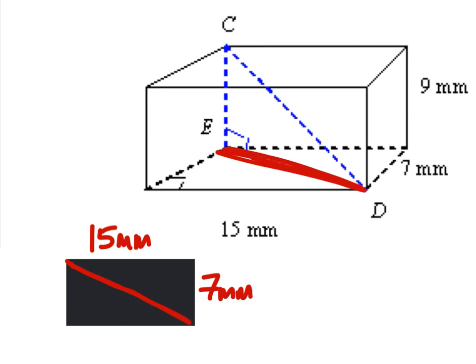So, in order to find that, because it's a rectangle, we know that's a right angle, giving us a right triangle. And so, we need to solve for that side. So we have two legs, 15 squared plus 7 squared should equal that hypotenuse squared.